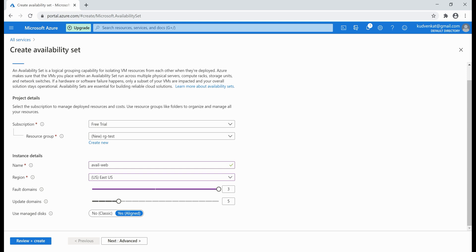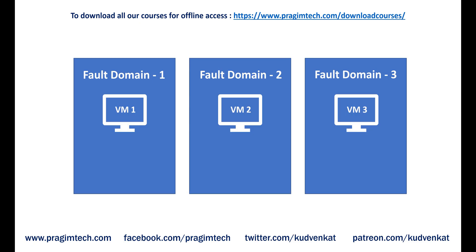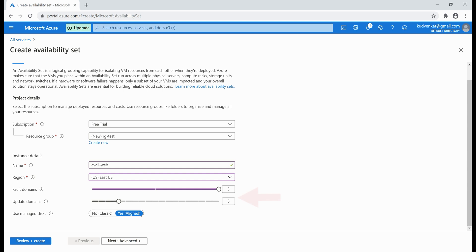What does this mean? Since we have set the fault domain count to three and when we create three virtual machines, each of them will be placed in three separate fault domains. If there is a fault like a power failure, only one of the server racks is affected, meaning only one of our VMs is down while the other two VMs from the other two fault domains are still available. This means our workload — in this case our web application — is still available to end users. Now, what happens if we create a fourth VM with just three fault domains? It will be placed in one of the three fault domains, meaning one fault domain will have two VMs and the remaining two will have one each.